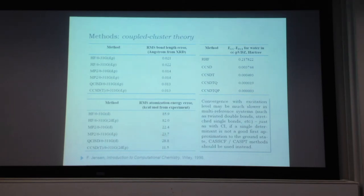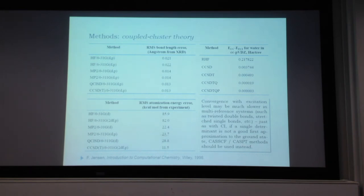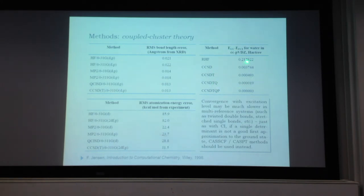For atomization energy—the difference in energies when tearing a molecule into individual atoms—a much higher level method is needed. Hartree-Fock isn't even close in the calorie range. With CCSDT, accuracy improves to a range comparable to experimental uncertainty. In computational chemistry, accurate enough typically means as accurate as you can measure experimentally. Convergence with excitation level is rapid for equilibrium geometry of water, but slower for twisted geometries where the Hartree-Fock determinant is a poor approximation.